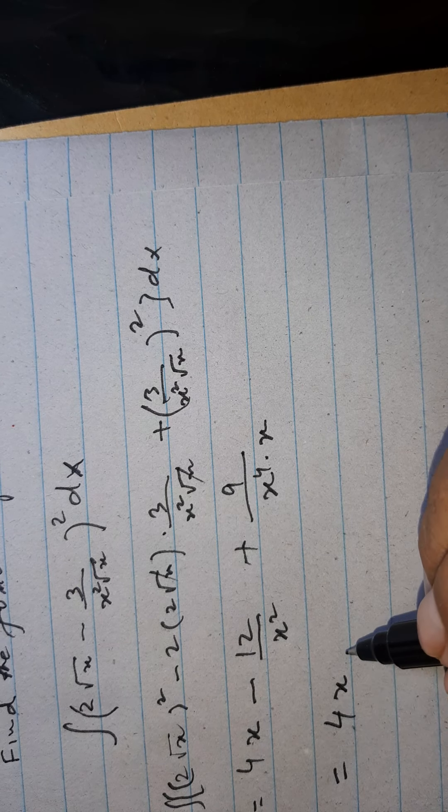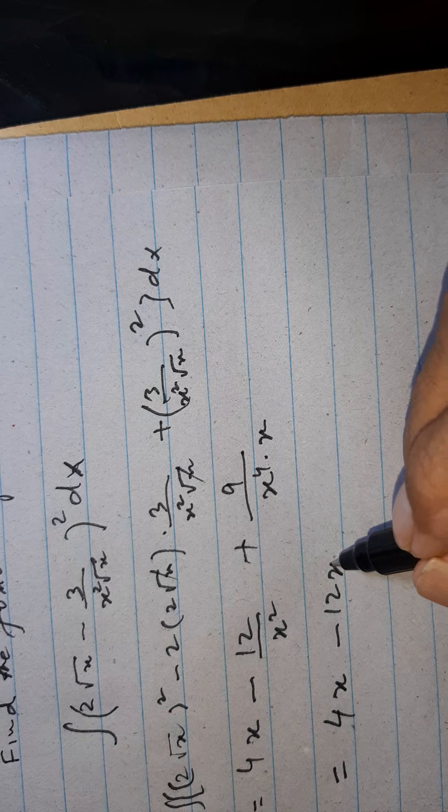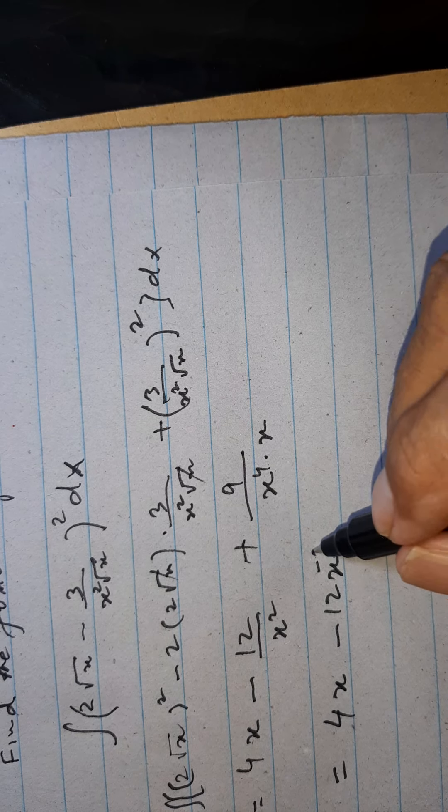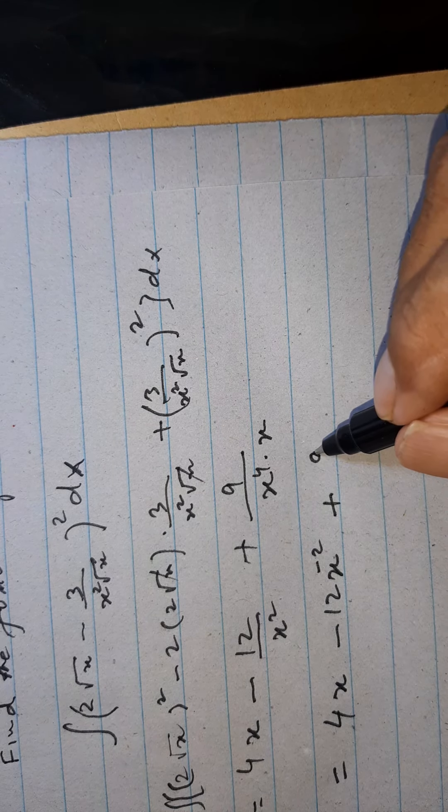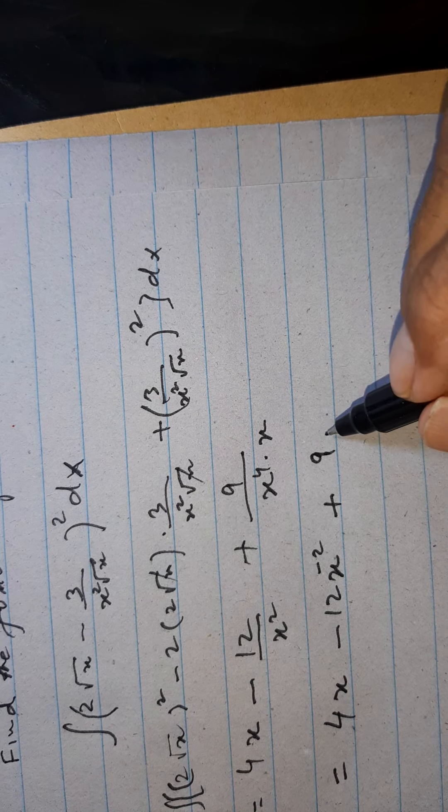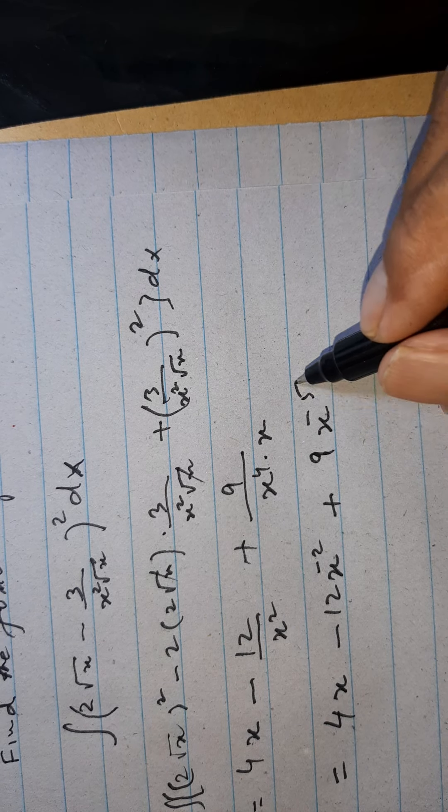And this will be, now we can write 4x minus 12 x power minus 2 plus 9 x power minus 5.